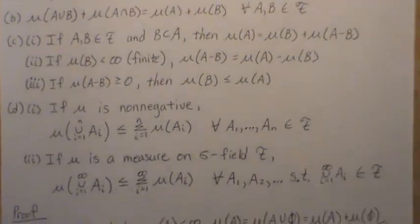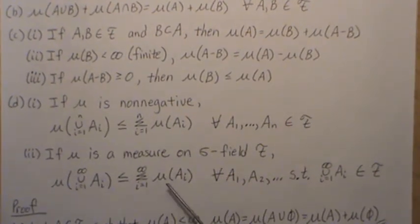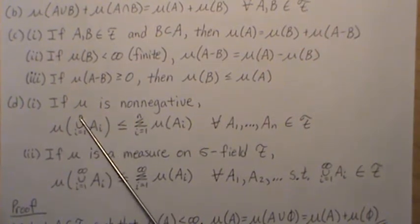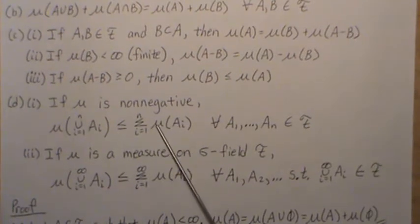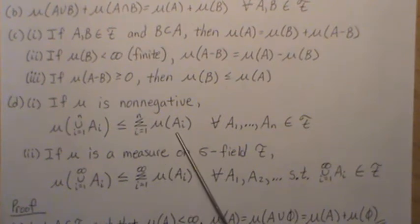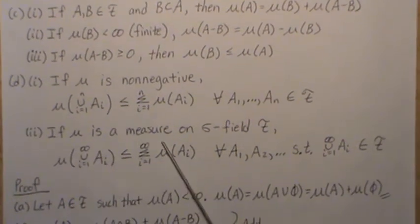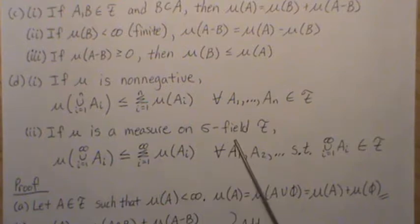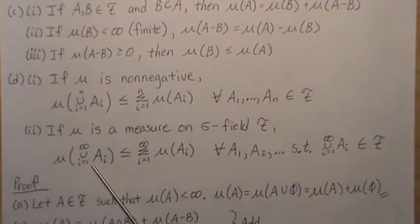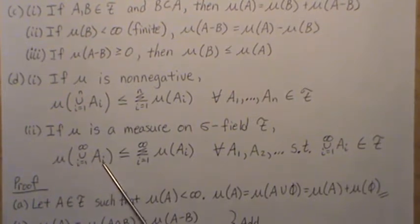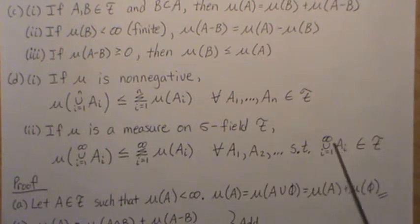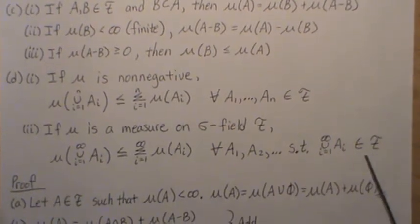If mu is a non-negative function, then this relationship holds — it's called finite additivity. Mu of the union from 1 to N is less than or equal to the sum of the individual sets from 1 to N. Now if mu is a measure on the sigma field F, then it holds for infinity: mu of the union of the sets is always less than or equal to the sum of the individual sets, for all sets such that the union is still in F, the sigma field.